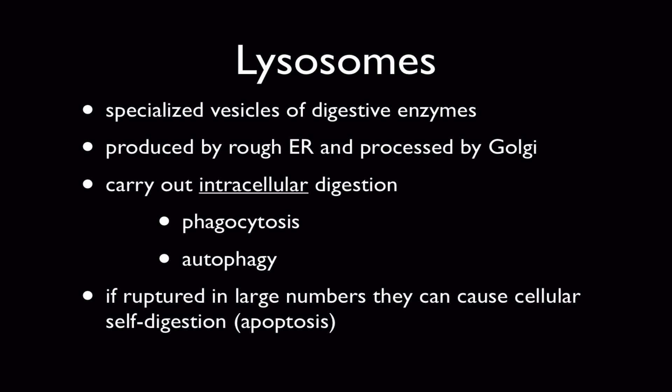Lysosomes are specialized vesicles found and produced within most cells that are containers for digestive enzymes. They're generally produced by the rough ER working with the Golgi apparatus to produce completed lysosomes filled with digestive enzymes. They carry out intracellular digestion — 'intra' meaning within the cytoplasm of the cell — which requires the cell to absorb food particles from outside, generally by way of endocytosis.